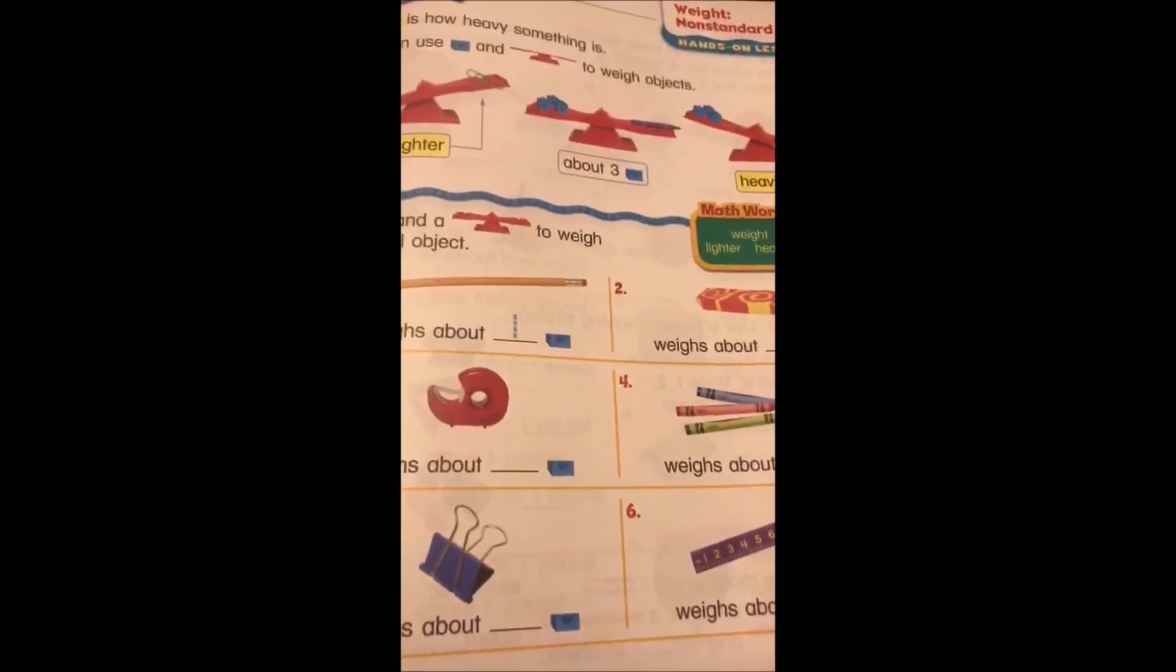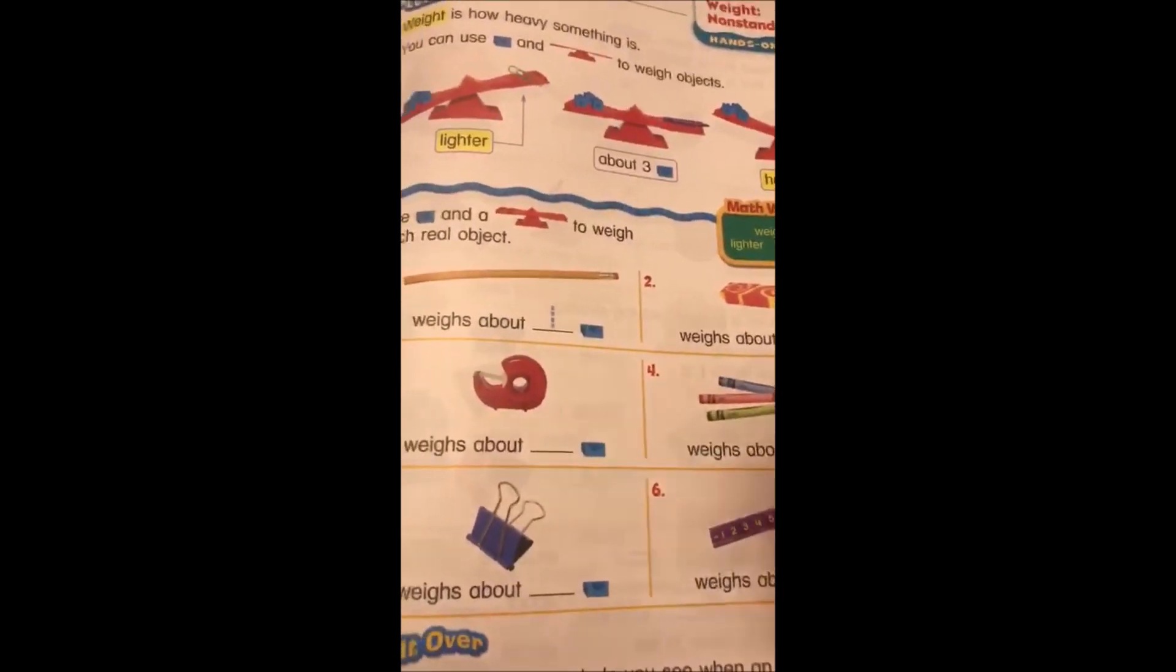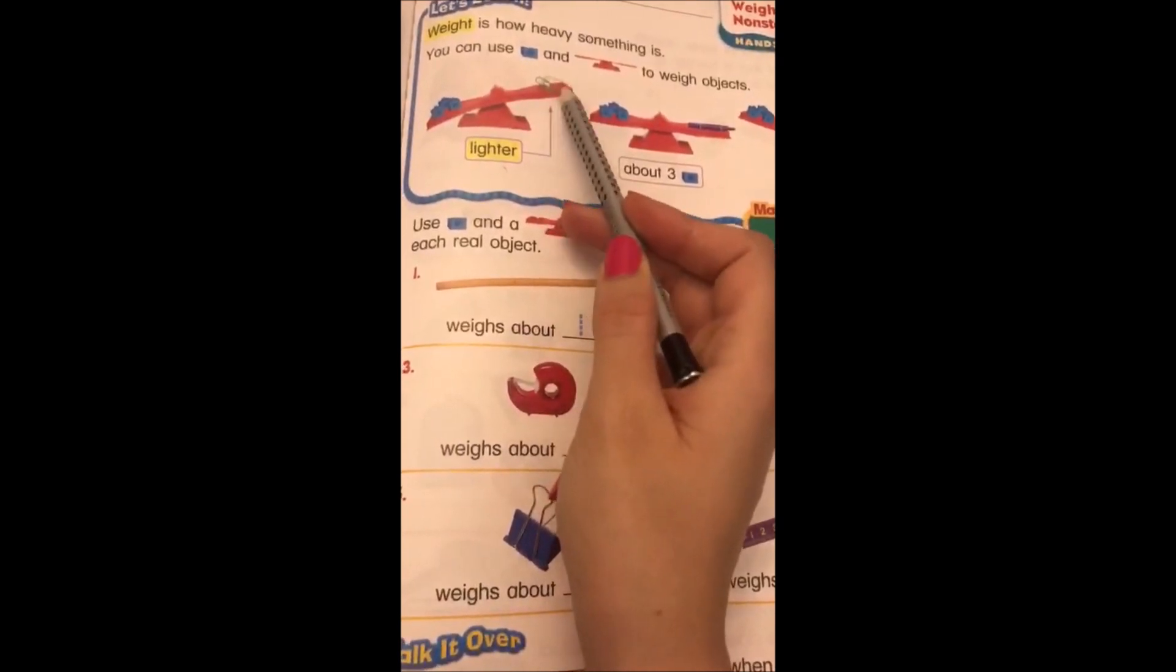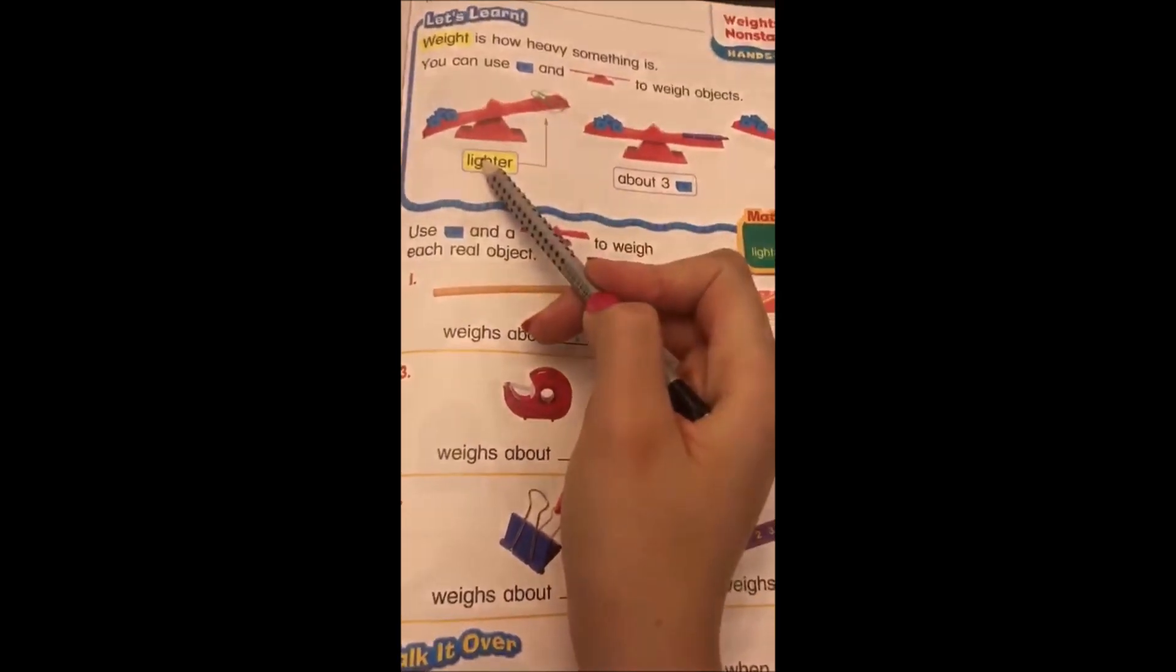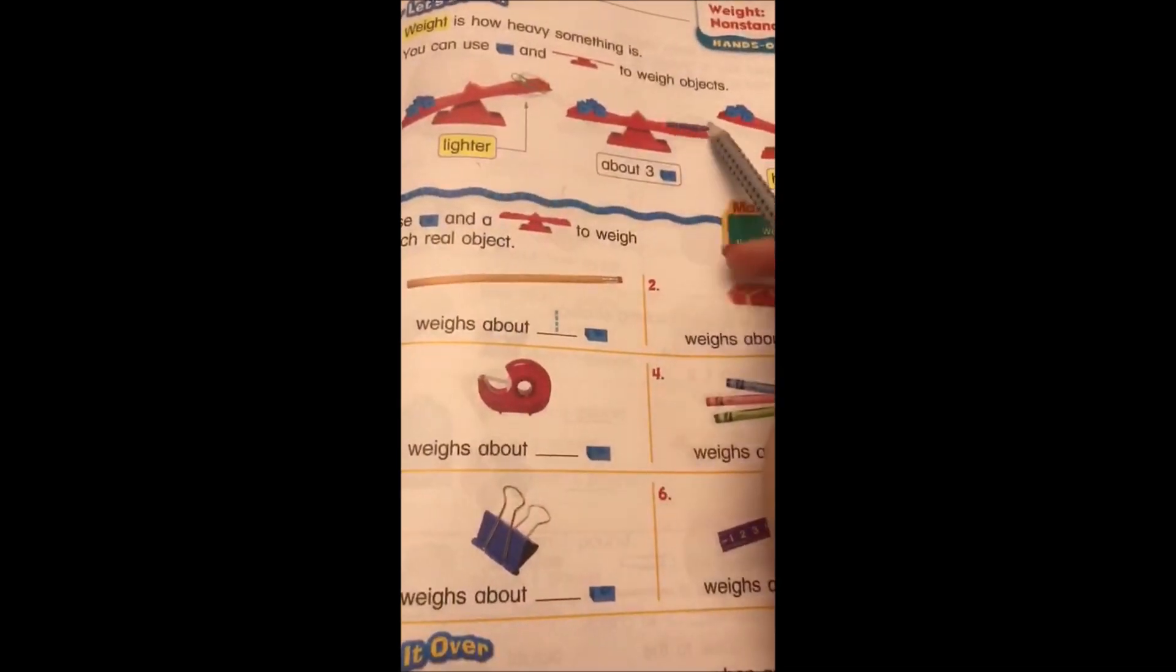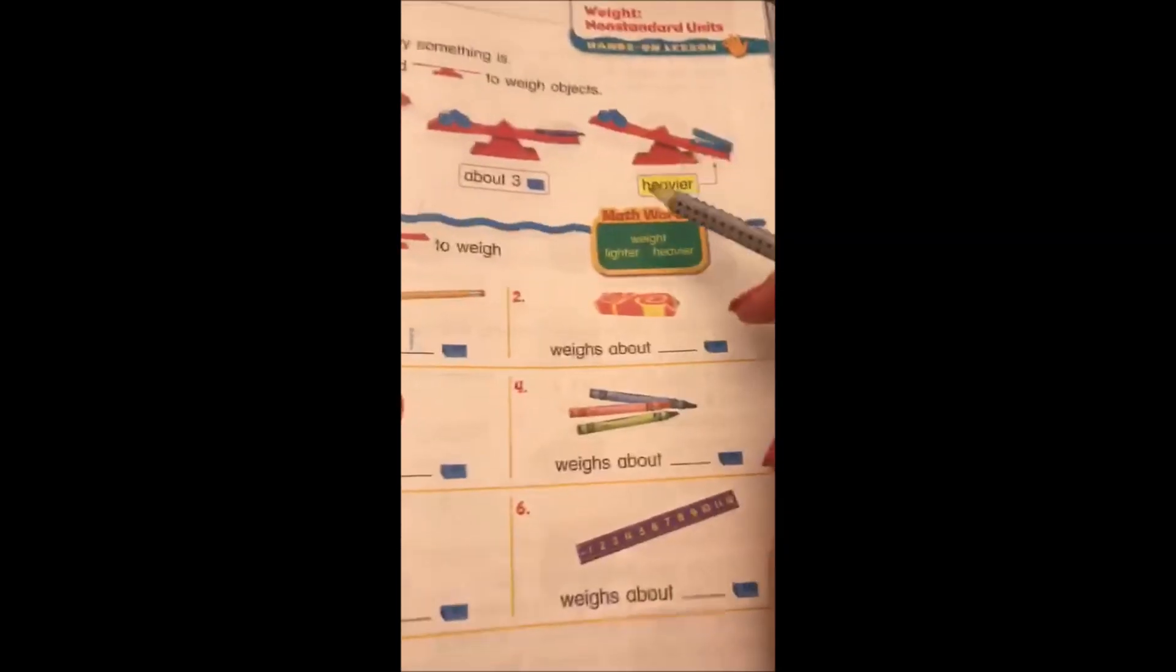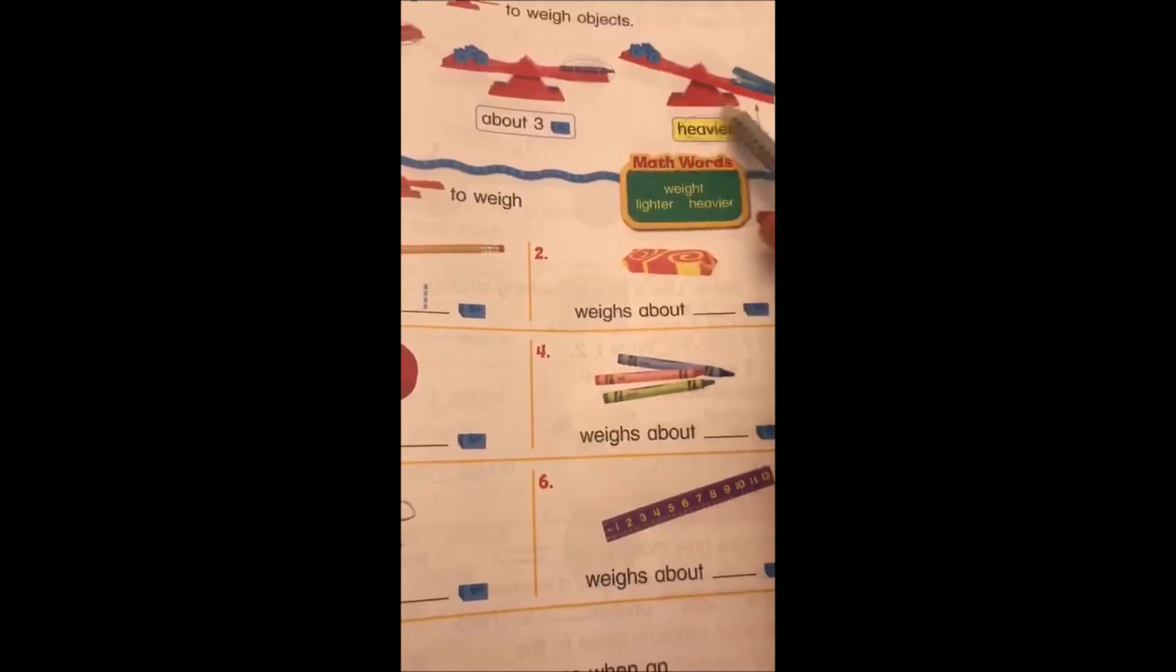But for now, we're going to just estimate. Let me say this in another way, we're going to play a game. When something is lighter, like a paper clip, we're going to say that it's lighter than three cubes. If it's something that could be equal to a marker, we're going to say that it's about three cubes. And when something is bigger, heavier, we're going to say heavier than three cubes.